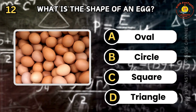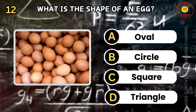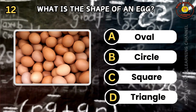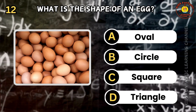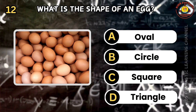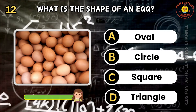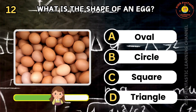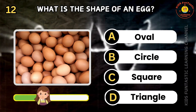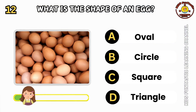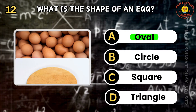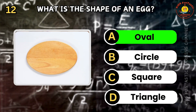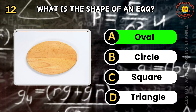Question 12. What is the shape of an egg? A: oval, B: circle, C: square, D: triangle. You're really clever! The correct answer is A.